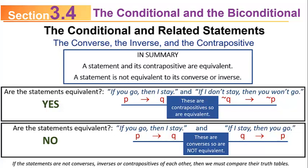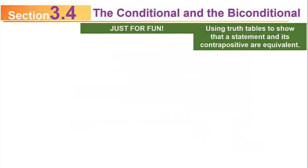If the statements are not converses, inverses, or contrapositives, you'd just have to do the truth tables to find out. But if you get a contrapositive, you can immediately say they're equivalent. Just for fun, let's go through the truth tables to show that a statement and its contrapositive are equivalent. This is sort of just for fun, but it's useful to show that something not necessarily intuitive is, in fact, true.